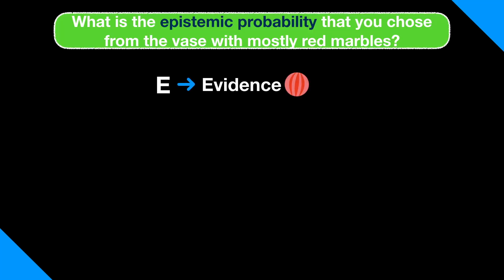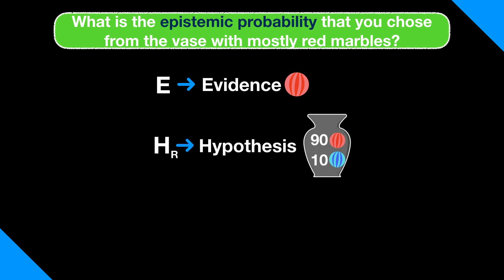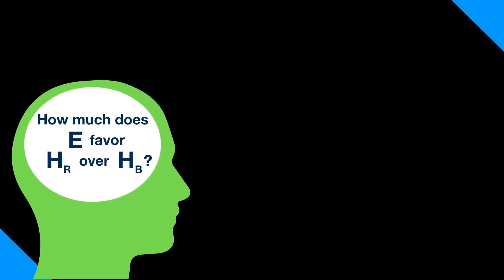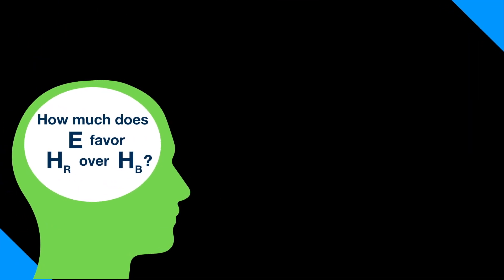We can answer that with a bit of math. Let E represent your evidence, the fact you drew a red marble. Let HR stand for the hypothesis that you drew from the vase with mostly red marbles. And let HB stand for the hypothesis that you drew from the vase with mostly blue marbles. How much does E favor HR over HB?